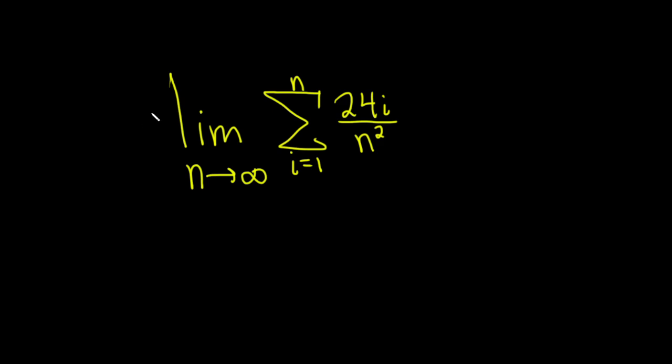Hi, in this problem we're going to evaluate this limit. So we have the limit as n approaches infinity of the finite sum from 1 to n of 24i over n squared. Let's go ahead and work through it very carefully.